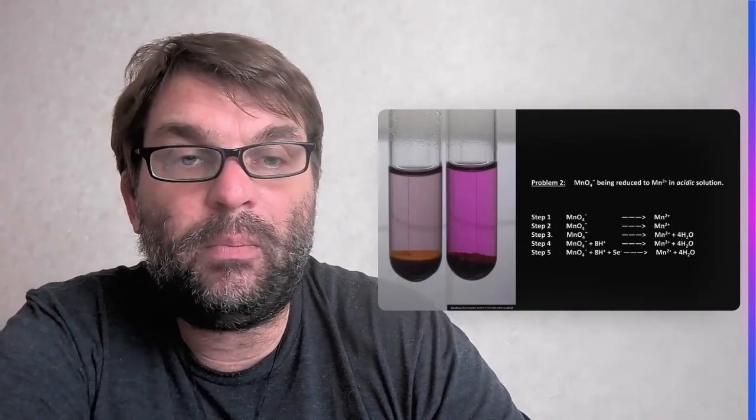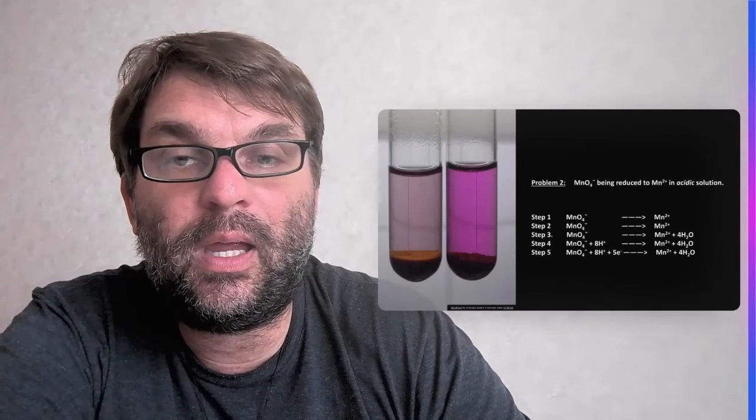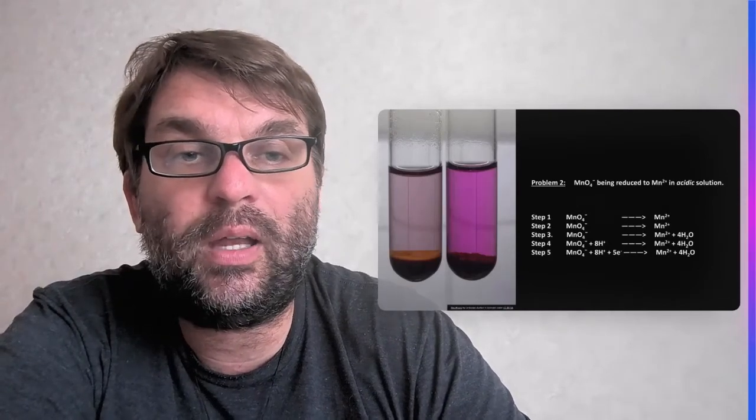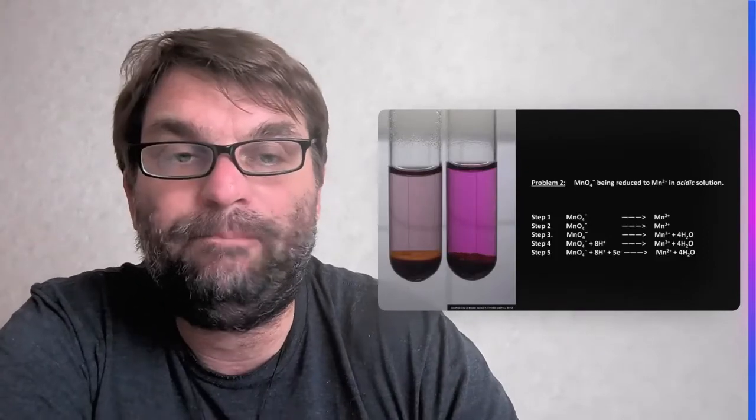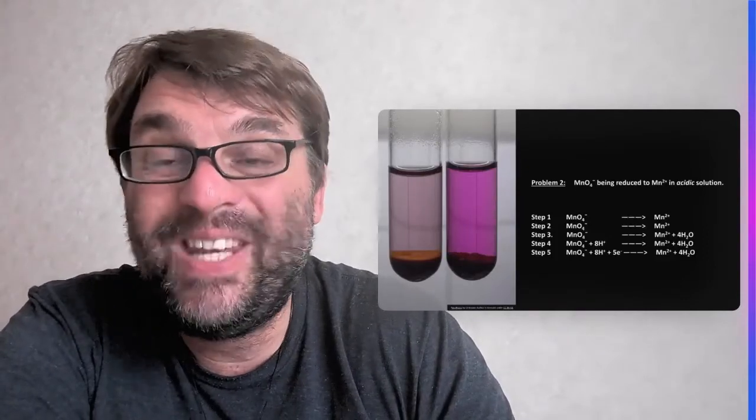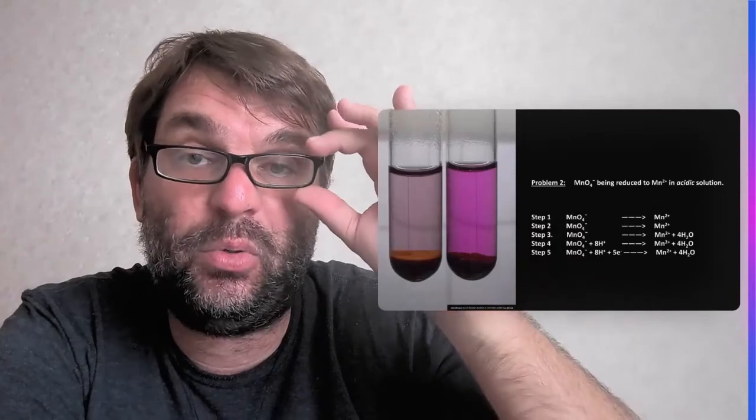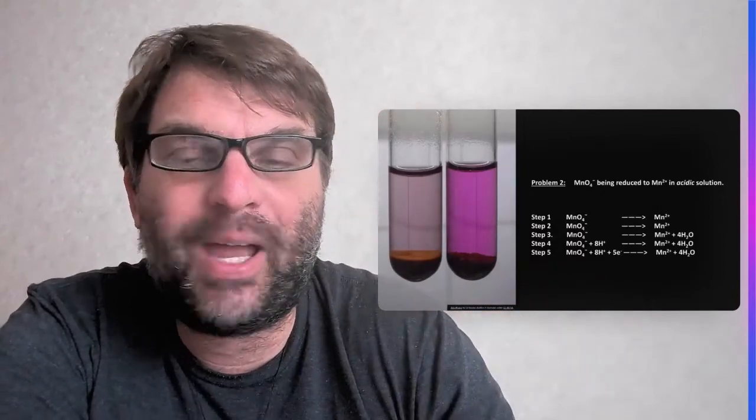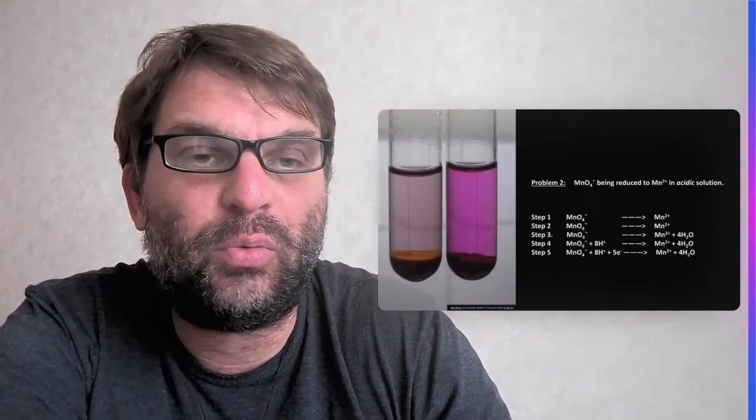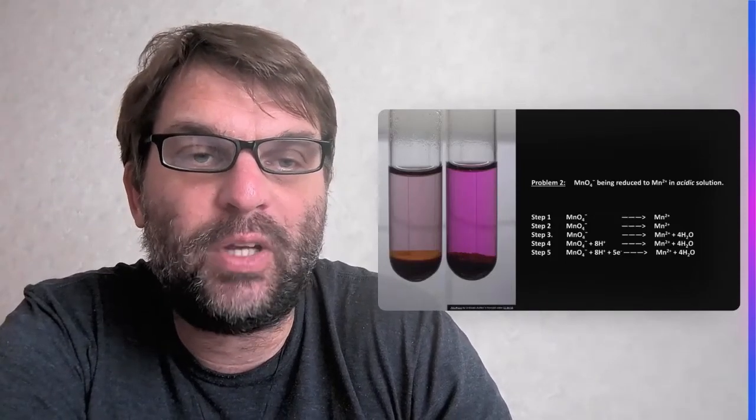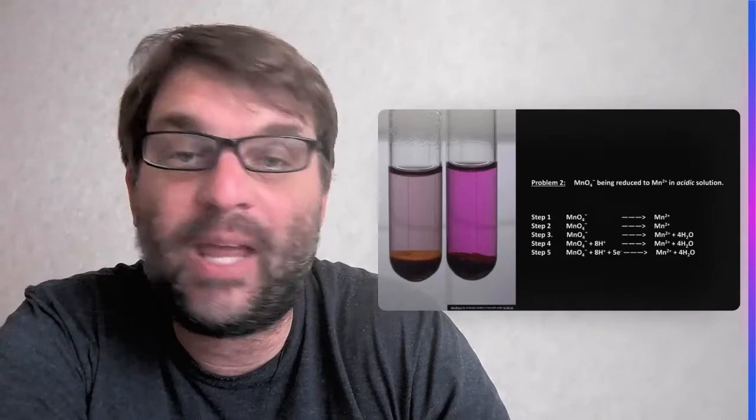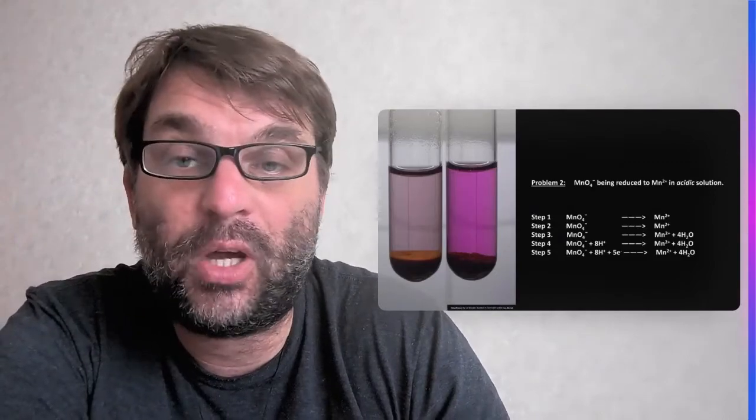So there's one manganese on one side, one manganese on the other, so that's all good for step two. Step three, we now have oxygen that we have to balance. So this is done by adding four waters onto the right-hand side, so that means you now have four oxygen atoms on the right-hand side and four oxygen atoms on the left-hand side. They're now balanced.